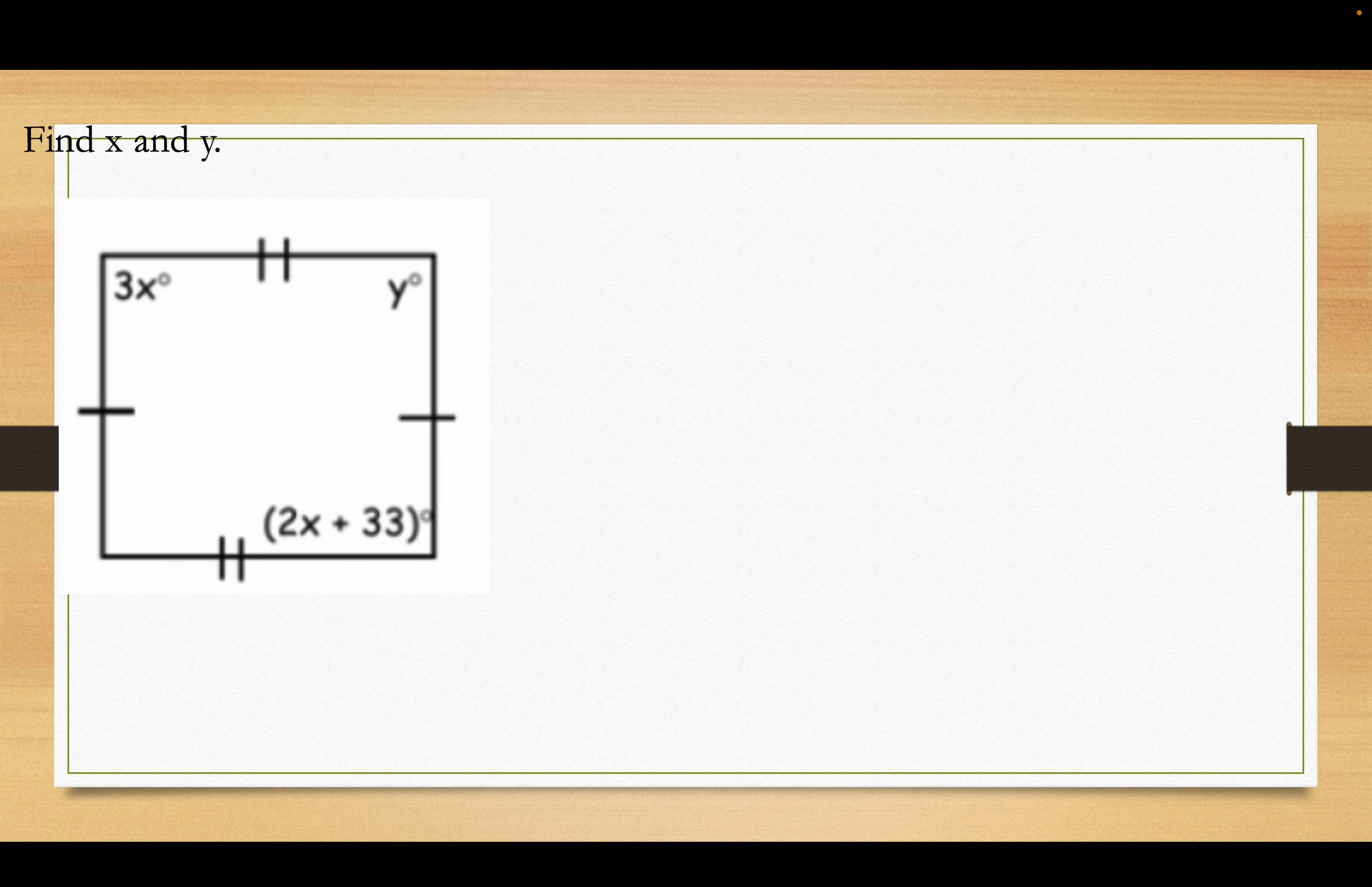Find X and Y. Now, I know you want to say that that's a rectangle, but you can't say that that's a rectangle. It looks like one, but we're not sure until we crunch these numbers out. What we do know for sure is that it's a parallelogram, because the opposite sides are congruent. Of course, we know that by the marks.